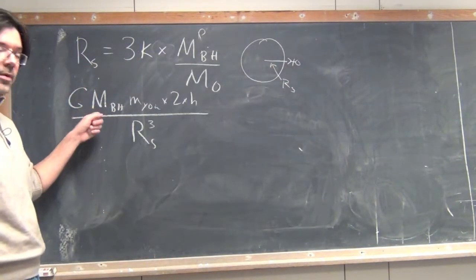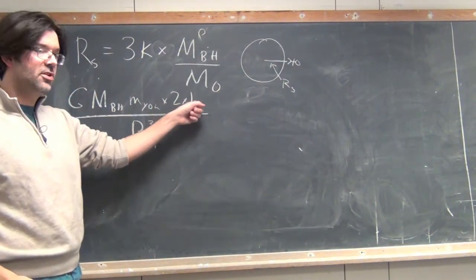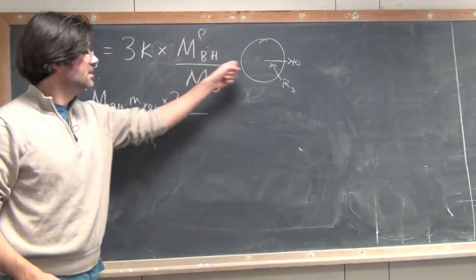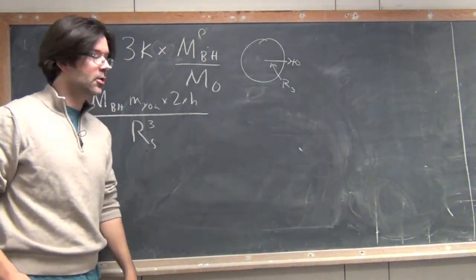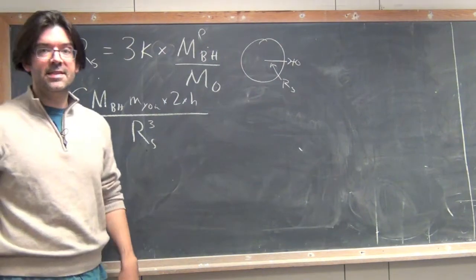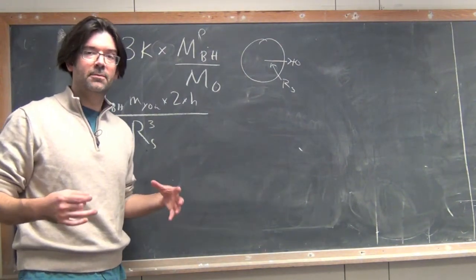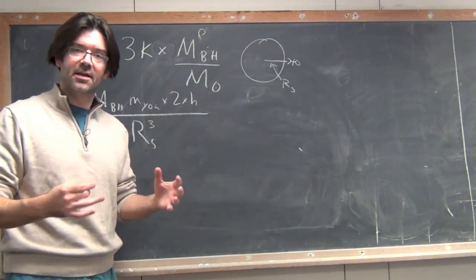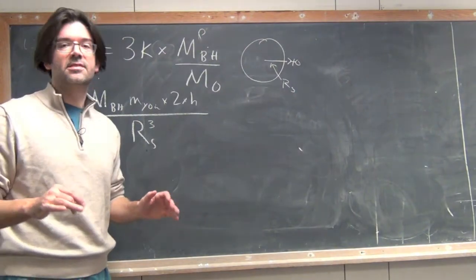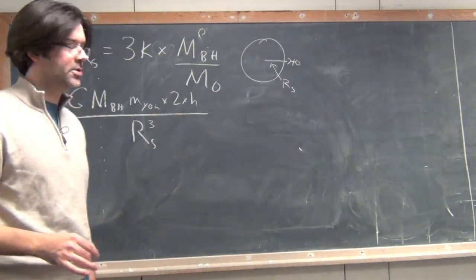So it's the usual formula, G M M times twice your height divided by the distance away from the center of the black hole cubed. And we want to know when is this force equal to the gravitational pull I would feel if I were at the surface of the Sun. Not the tidal force at the surface of the Sun, but the gravitational force at the surface of the Sun.